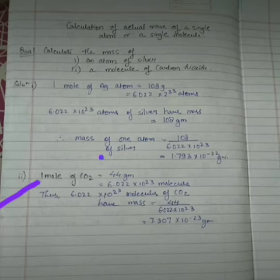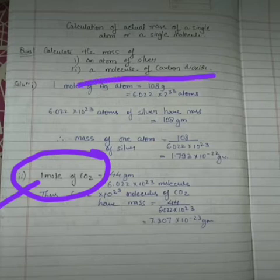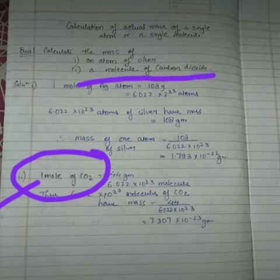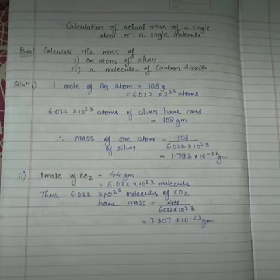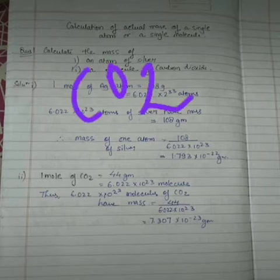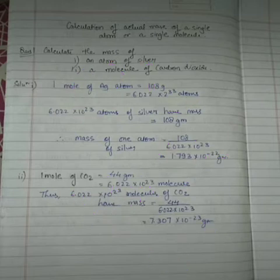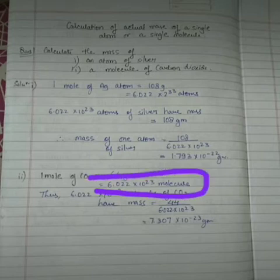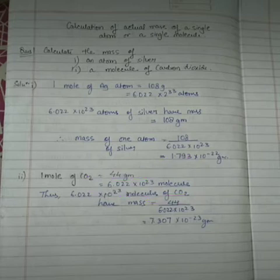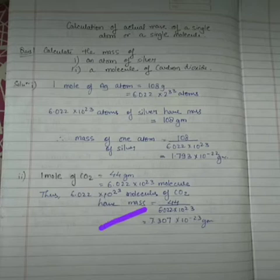Now for the second question — it is asking for the actual mass of a single molecule of carbon dioxide. The molar mass of CO₂ is: 12 for carbon and 32 for oxygen, so it will be 44 grams. One mole of carbon dioxide is also equal to 6.022 × 10²³ molecules, since we are considering molecules.